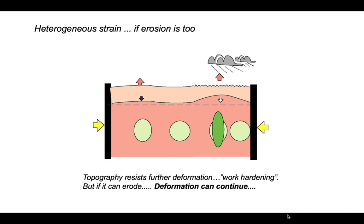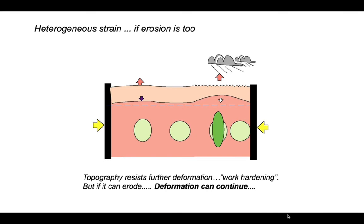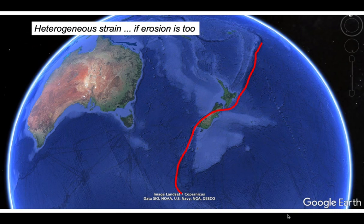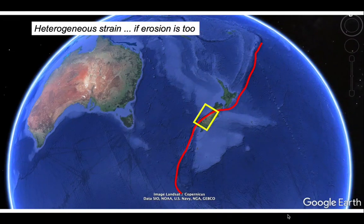So if the rain is only falling on one part of our model. Let's explore this by looking at some natural examples. Let's zoom in on New Zealand. New Zealand lies on the plate boundary between the Pacific plate on the right and the Australian plate on the left. But it also lies surrounded by oceans, particularly the Tasman Sea on the west, and it's this direction that the weather comes from. Let's zoom in to this area here in South Island New Zealand.